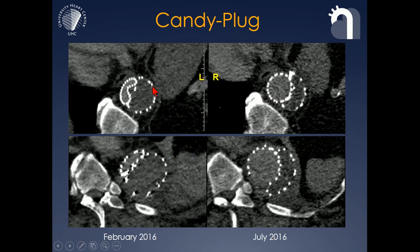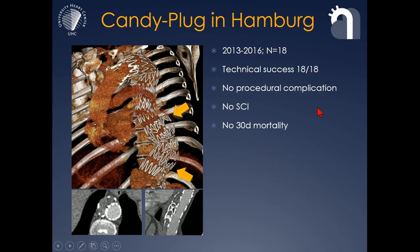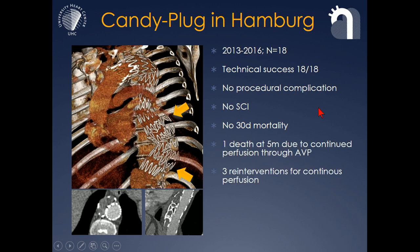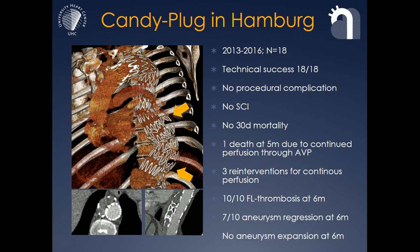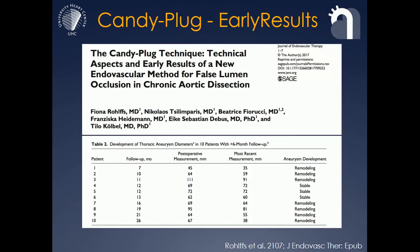What is nice about these materials is that even though after the repair initially the false lumen may look compressed and even without any ballooning, if you have excluded the false lumen successfully, the true lumen will enlarge and the candy plug will take more of a semilunar shape and get smaller. So far in our institution, we treated 18 patients with good success. There was one death in follow-up where the initially used Amplatzer vascular plug was not sealing the mid part of the plug. The majority showed regression of the aneurysm, and 7 of 10 patients with more than 6-month follow-up showed remodeling of their previously growing aneurysm.